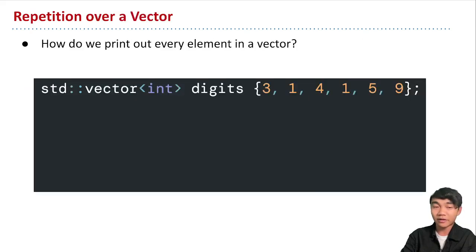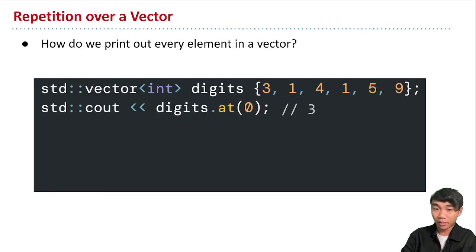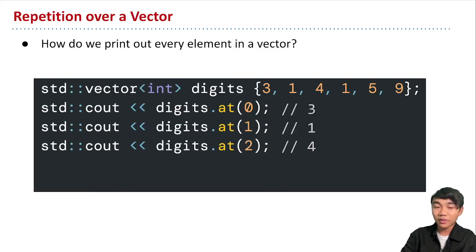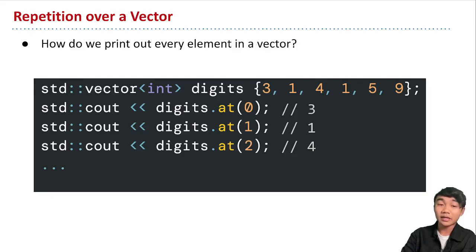Another thing we might want to do is print out every element in a vector. We could use the at member function to access elements by index and print those out individually. Here I have a vector of ints called digits with a list of numbers. I could do digits.at, using dot notation to call the member function at, and pass in the index to get each element — index zero prints three, index one prints one, and so on. This works because we know exactly how many elements are in this vector — six elements, so we access them with indices zero through five. But this would be impossible if we didn't know how many elements were in the vector ahead of time.